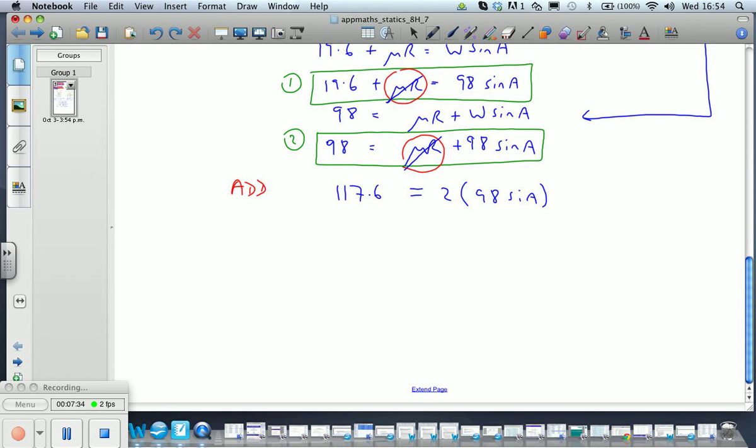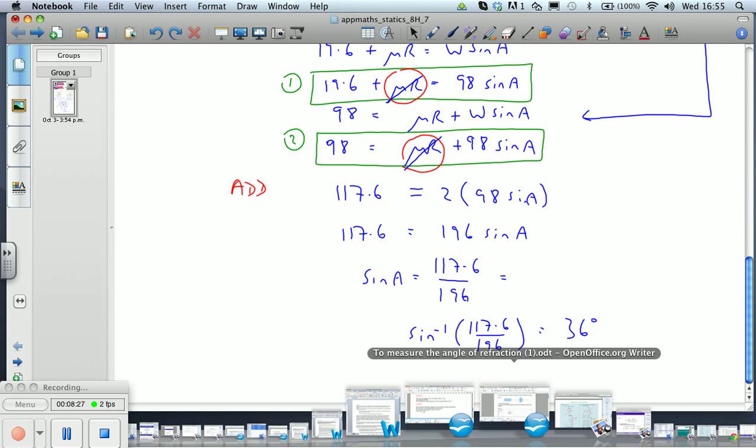Therefore we have 117.6 = 196 sin A, and so sin A = 117.6/196. And so we can calculate our angle A from sin^(-1)(117.6/196), and that gives something like 36 degrees and some minutes.